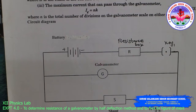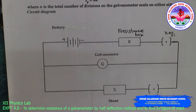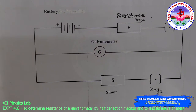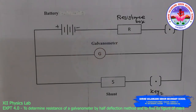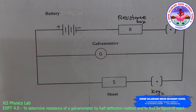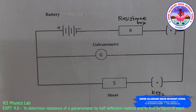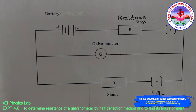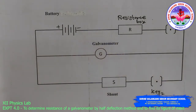Circuit diagram: the battery negative is connected to the resistance box, the resistance box to the key, and the galvanometer should be in parallel with the connection of the shunt and the resistance box.